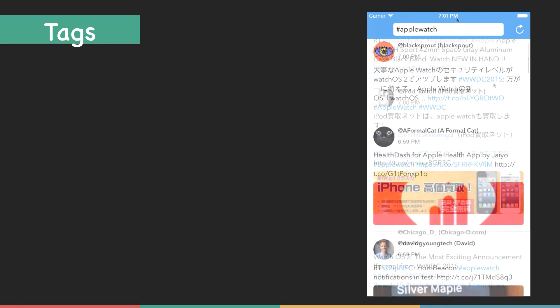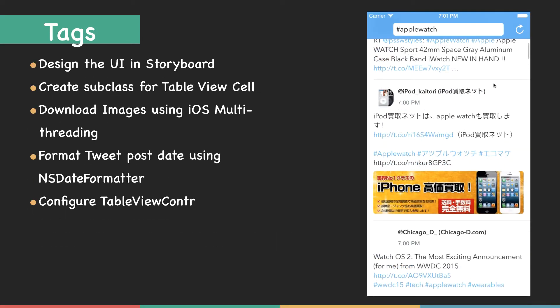Here's the course outline. In the first video, we will design the UI in the storyboard and then create a subclass for table view cell. After that, we will learn how to use iOS multi-threading to download images from a URL, and then learn to format the tweet post date using NSDate formatter. You can see on the screen right here that we have 7pm displayed, which is the effect of using NSDate formatter.